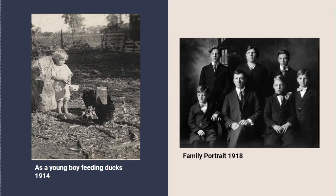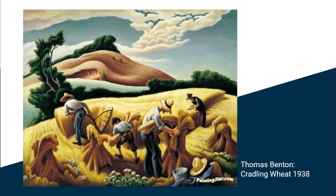He moved to New York in 1930 to study with the artist Thomas Hart Benton, who did energetic paintings of American life. Benton's use of rhythmic lines to show movement all over the canvas influenced the way Jackson painted. Later, Jackson said that Benton, a realist painter who disapproved of abstract art, was a good artist to react to.